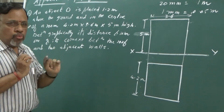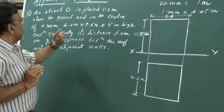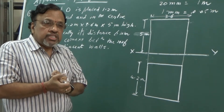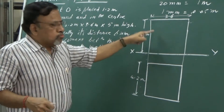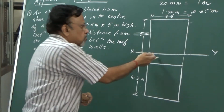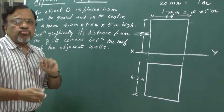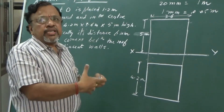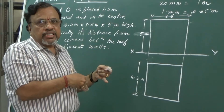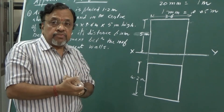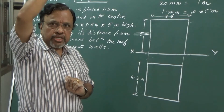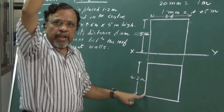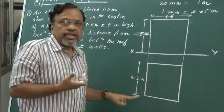Now, in this room there is an object O placed 1.2 meters above the ground. Since it is above the ground, that detail appears in the front view — I show the 1.2 meters height there. The object is also placed in the center of the room. From the front view I cannot see the center; I need to look from the top. In the top view, I join the diagonals of the room plan to find the center.